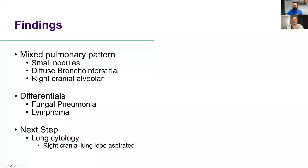With small nodules, diffuse bronchointerstitial, and alveolar patterns, our main differentials are fungal pneumonia and lymphoma as the cancerous differential that would present with similar radiographic features. What's going to help us get to the answer is, of course, cytology — and that is where Kate is going to come in with an example.